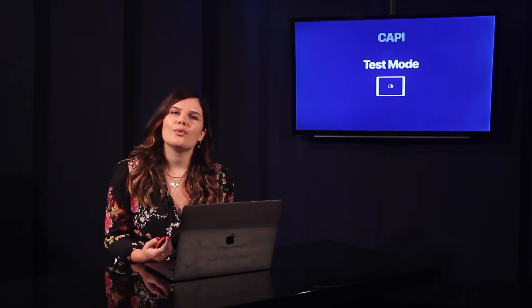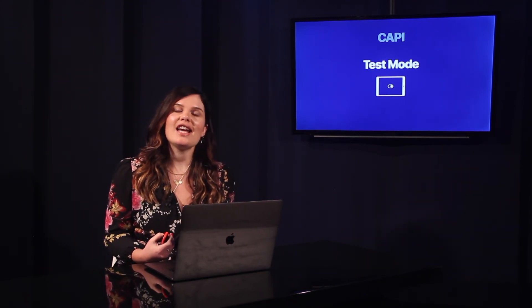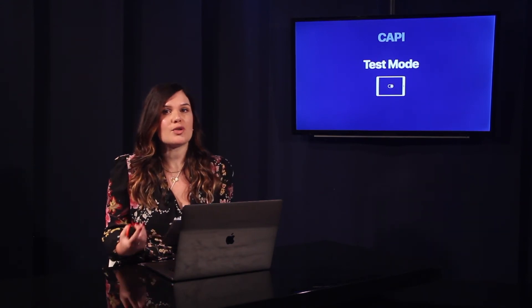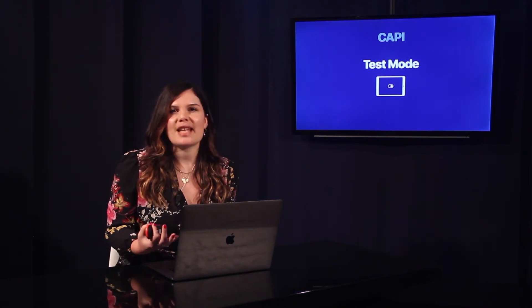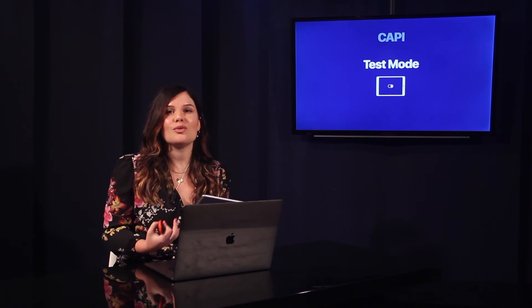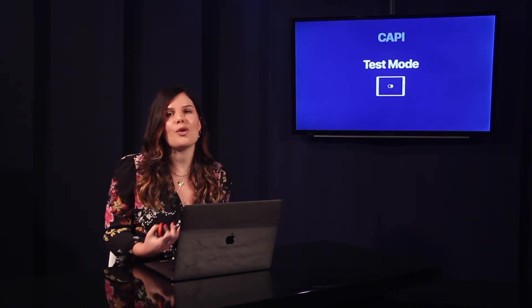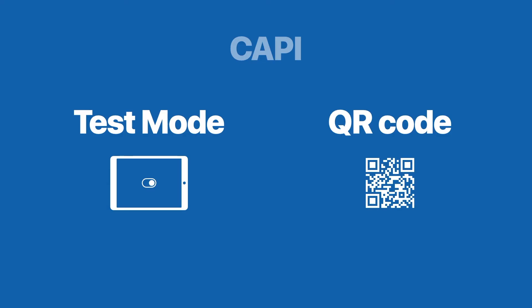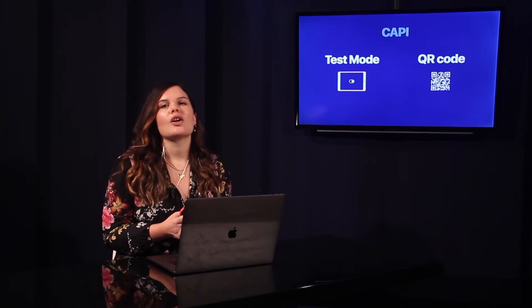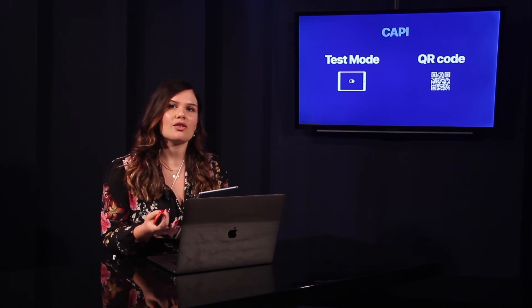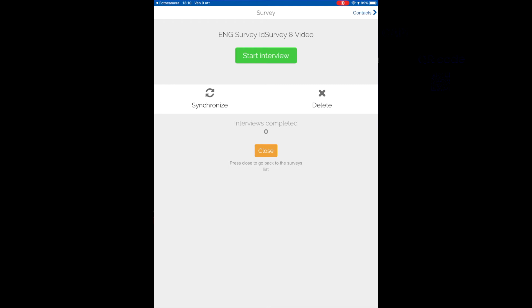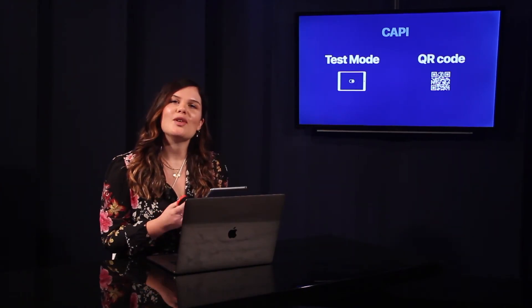Every time you want to test a questionnaire on a device, you need to open the app, enter the ID Survey link, the questionnaire number, and the username and password of the agent. These are simple steps but particularly annoying if you have to repeat them every time you make changes and run new tests. So we found a solution: thanks to QR codes in the list of agents assigned to CAPI, you just need to frame them with your smartphone or tablet camera, and the CAPI app synchronizes and enters the questionnaire instantly.